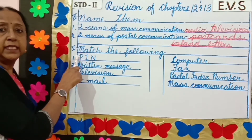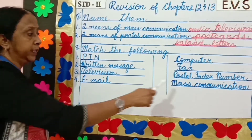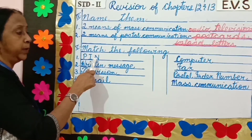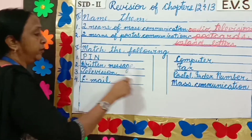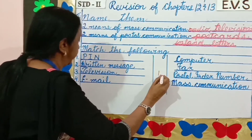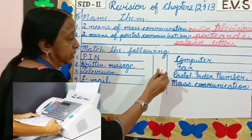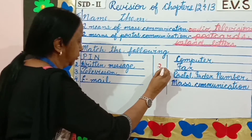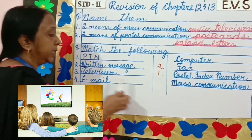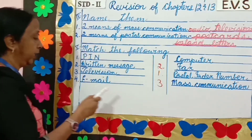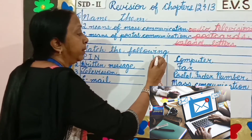Our next question is match the following. You have to match from this column to this column. PIN — the full form of PIN is Postal Index Number, so we write number 1. Written message — written message is fax, so we write number 2. Television — television is mass communication, number 3. And email — we can send email through computer, so we write number 4.